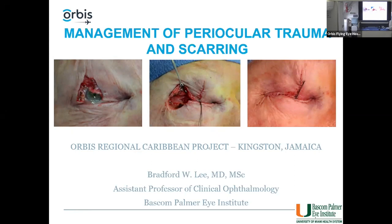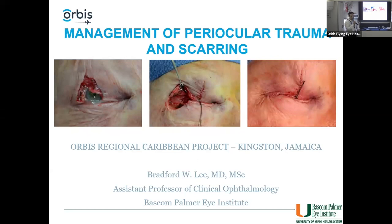I'll very briefly touch on laceration repair so I don't duplicate his work, and then we'll talk about scarring, which applies to all cases of trauma and can be managed outside of the OR. It's very important to the reconstructive and healing process and an area of personal interest for me. This patient had a basal cell carcinoma — a fairly large segment was excised — and this is a rotational flap called a reverse tensile flap, mobilizing a semicircular flap and releasing the lateral canthal tendon to borrow tissue from the temporal region.